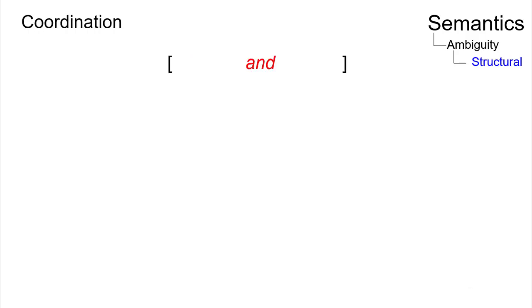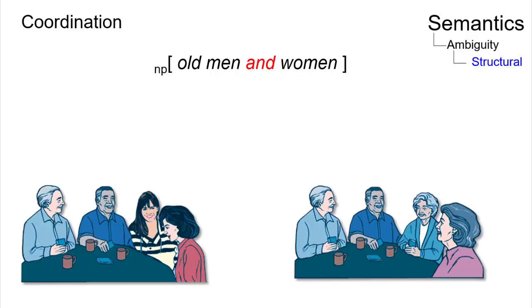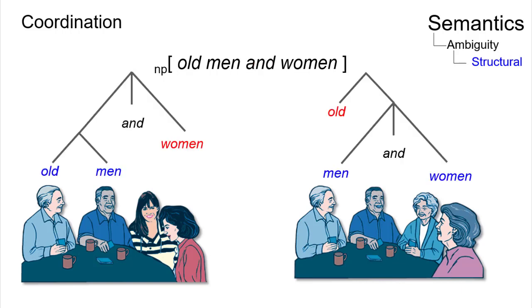For example, the coordinate structure in the noun phrase 'old men and women' has two interpretations: old men and women of any age, and men and women who are both old.